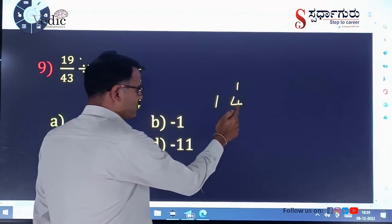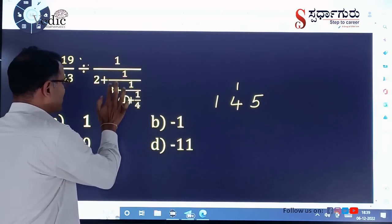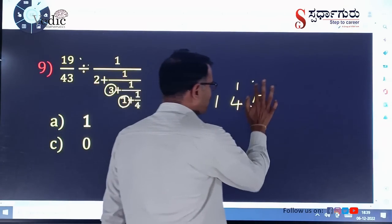1 into 4 is 4. 4 plus 1 is 5. Then next, you can take another one, 3. Write the 3 above the 5.